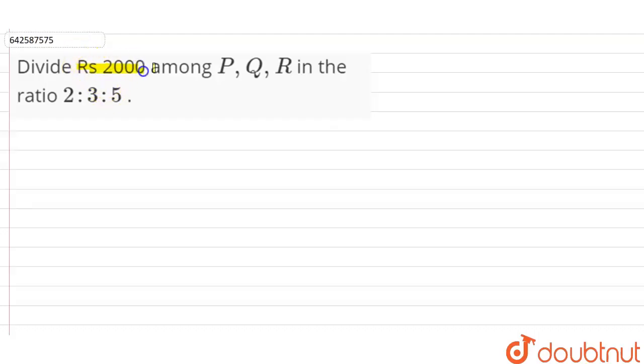rupees 2000 among P, Q, R in the ratio 2 ratio 3 ratio 5. So firstly, the ratio given to us is